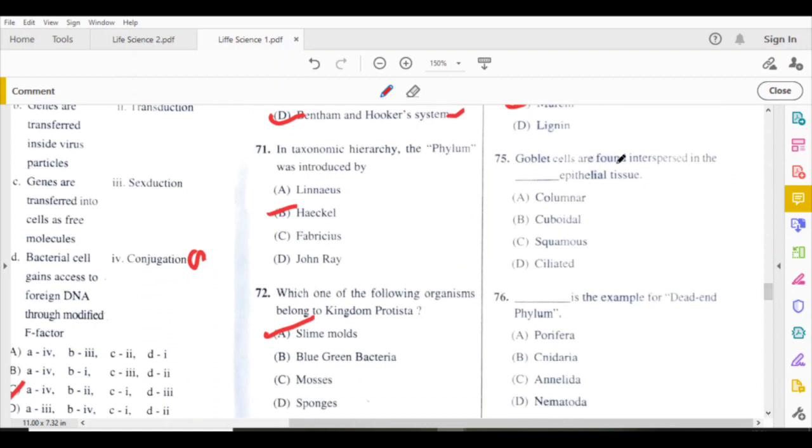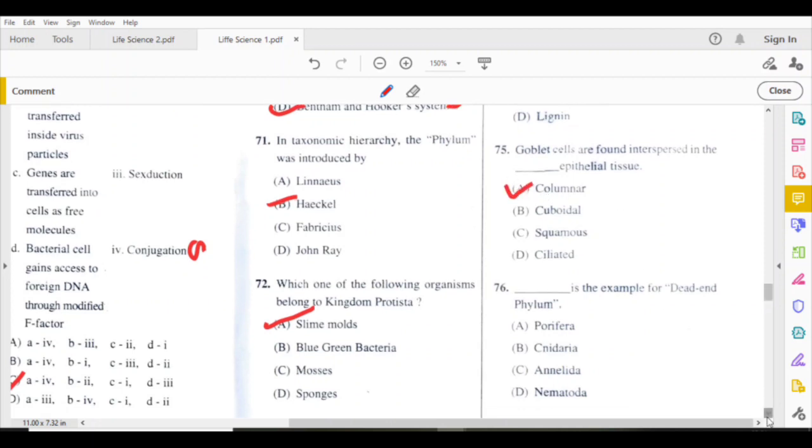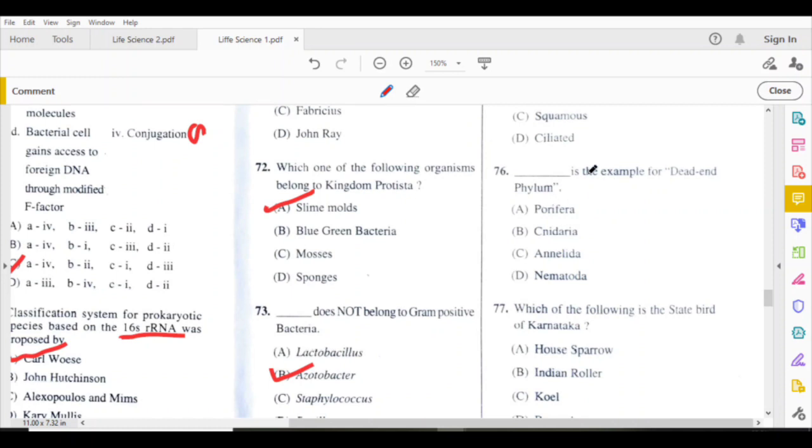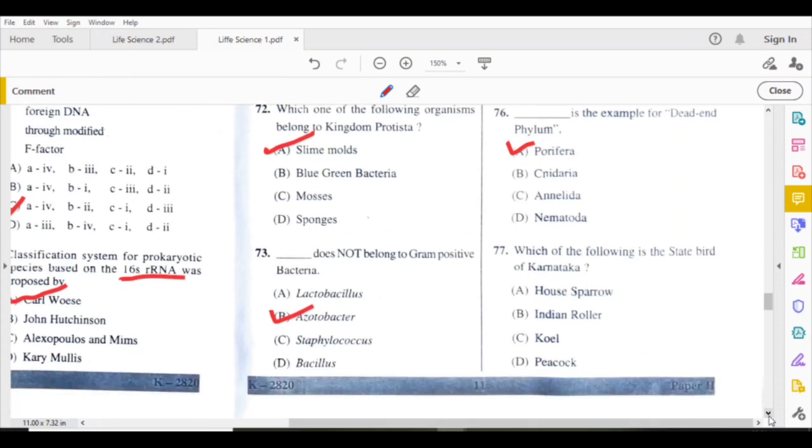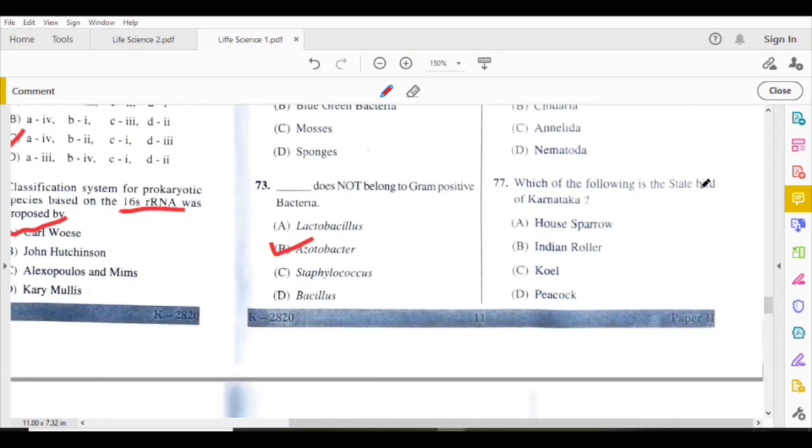Goblet cells are found interspersed in the columnar epithelium tissue. Porifera is the example for dead-end phylum. Which of the following is the state bird of Karnataka? Indian Roller.